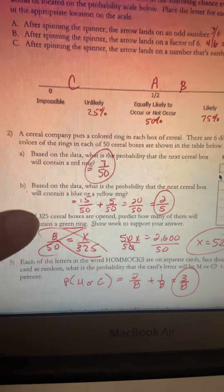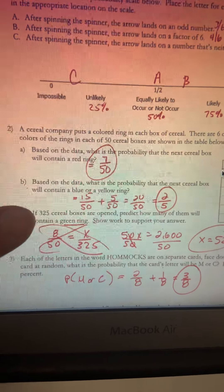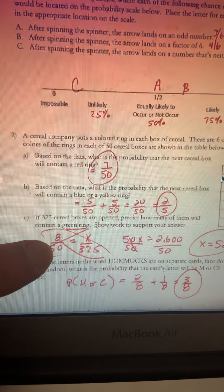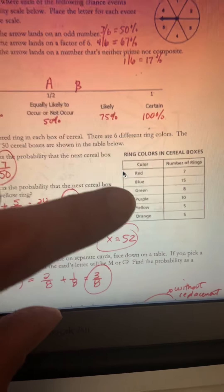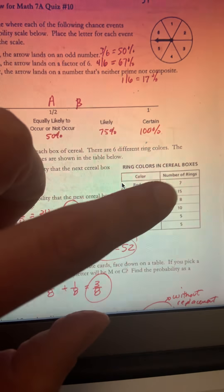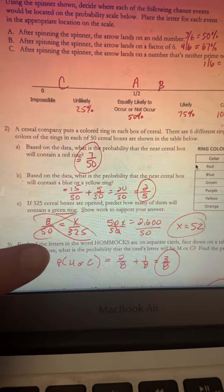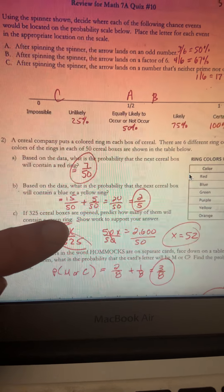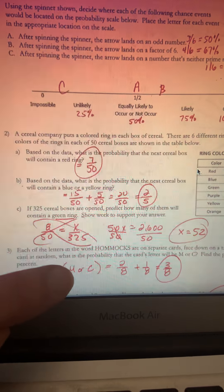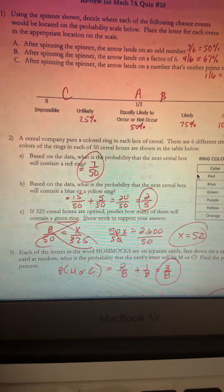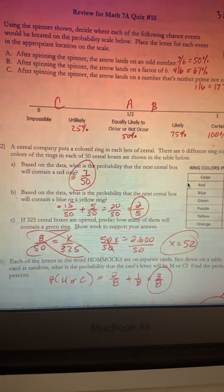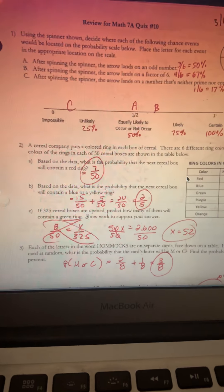We want to predict: if there are 325 cereal boxes, how many contain a green ring? First, you always write down the actual probability. In this case, the actual probability of a green ring is 8 out of 50. Then you set a proportion. We're trying to predict how many green rings there should be for 325 cereal boxes. That goes on the bottom. Then you cross multiply and divide, and you get there should be 52 green rings.